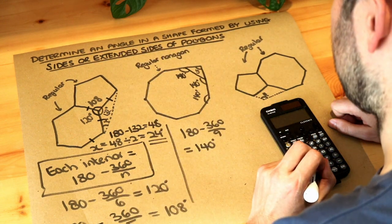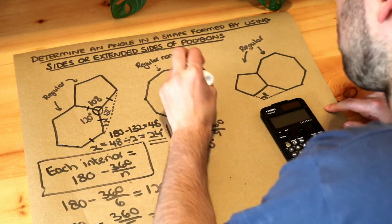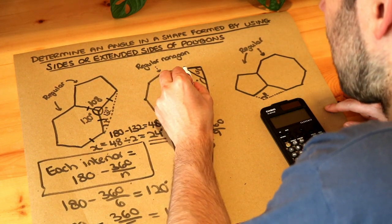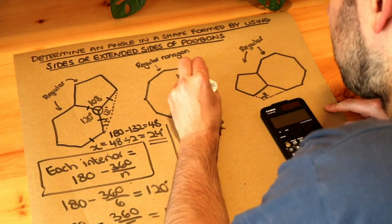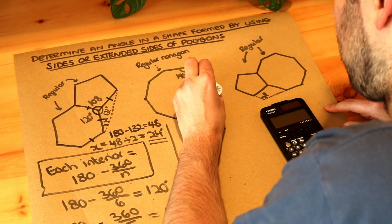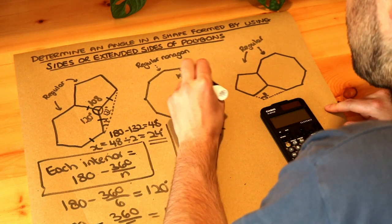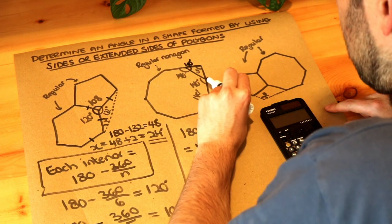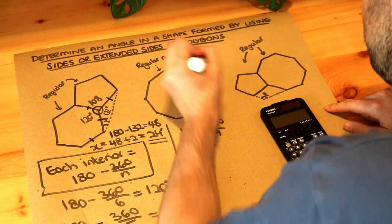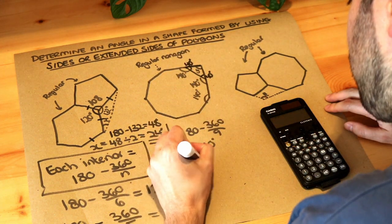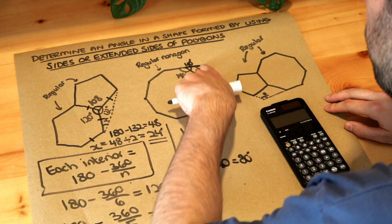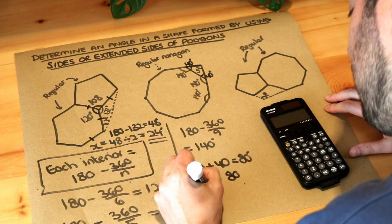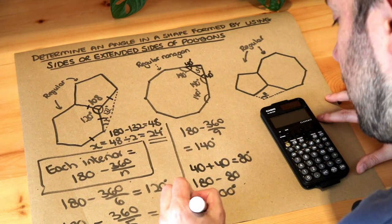This side here is this side of the polygon extended out further in the same direction, making a straight line. So that exterior angle and that interior angle add up to 180, giving 180 minus 140 equals 40 degrees. By symmetry, the other exterior angle is also 40 degrees. These two angles add up to 80 degrees, and subtracting from 180 because angles in a triangle sum to 180: 180 minus 80 equals 100 degrees. So Y is 100 degrees.